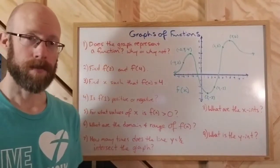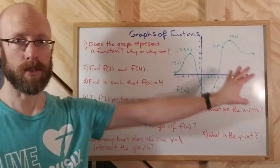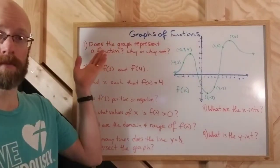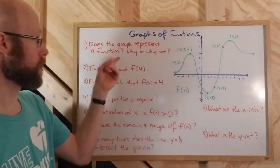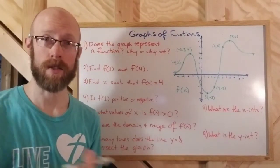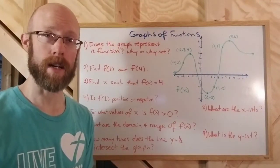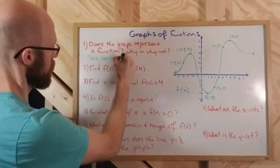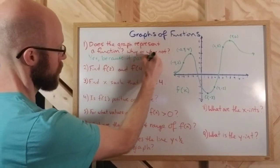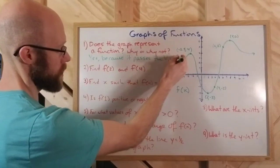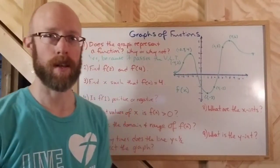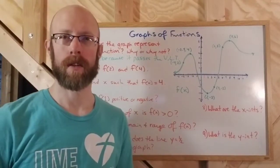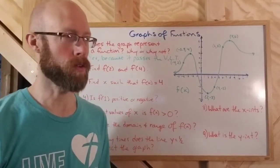I have a series of questions up here about this graph. I'm going to call this graph f of x, because it is a function as we just discovered. The first question is: does the graph represent a function? Why or why not? The answer is yes, it is a function, because it passes the vertical line test — VLT. You could also say something like for every input there's exactly one output, but the simplest way is: it passes the vertical line test.